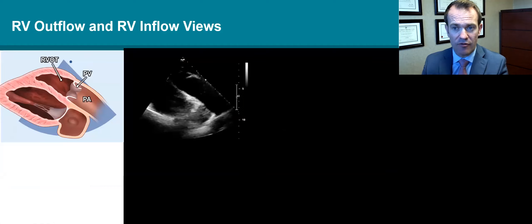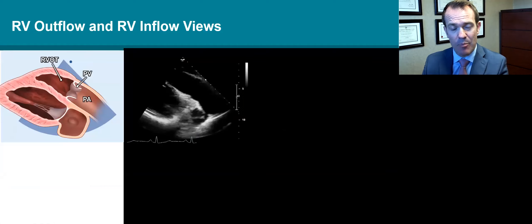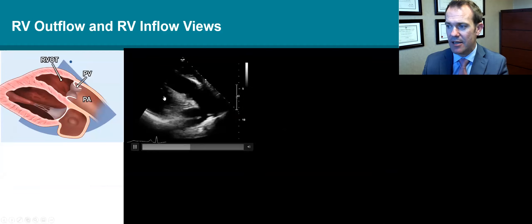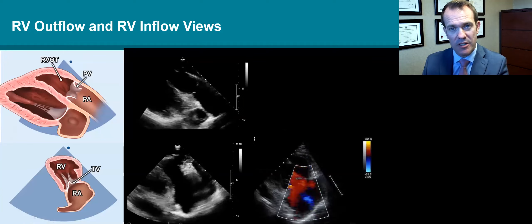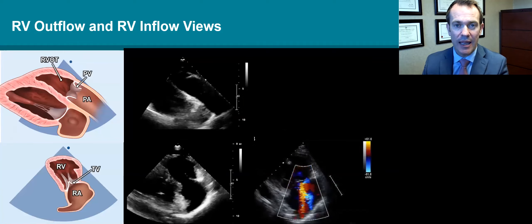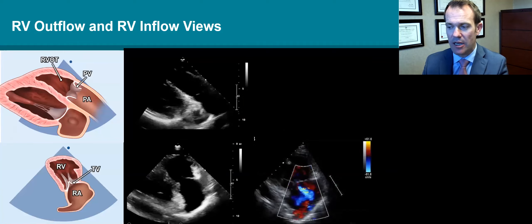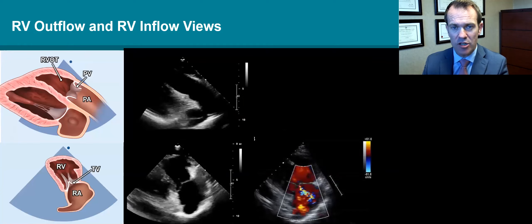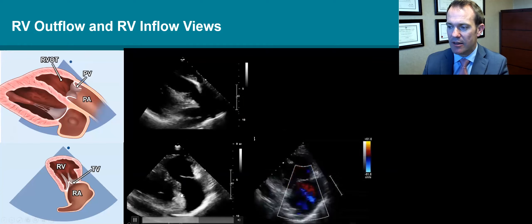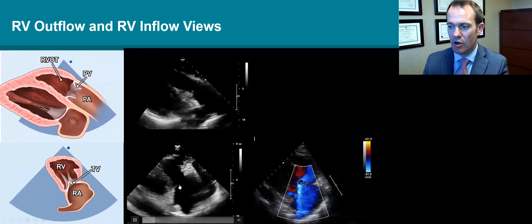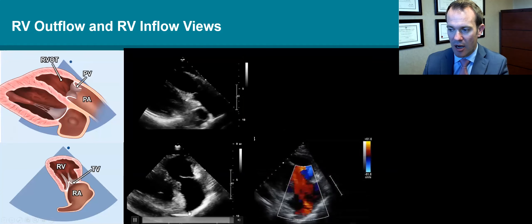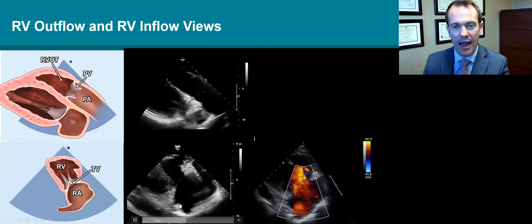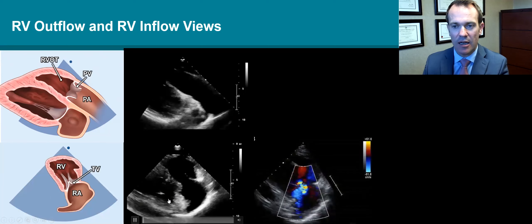From that parasternal view, we can tilt the scan plane anteriorly to get an RVOT or RV outflow view. We can also tilt the probe inferiorly or posteriorly towards the patient's hip to get the RV inflow view, where we see the tricuspid valve, the IVC, and the coronary sinus just sneaking in.